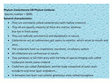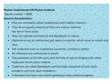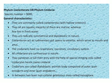Cnidarians have a gastrovascular gut opened to the exterior which serves as both mouth and anus. Cnidarians have no respiratory, excretory, or circulatory system. All cnidarians are mostly carnivorous in nature and are mostly predators. They paralyze or kill their prey with the help of special stinging cells known as cnidocytes. Due to the presence of cnidocytes, they are also known as Cnidaria.